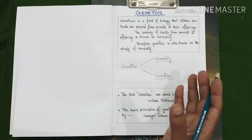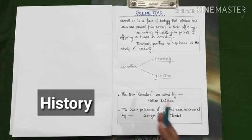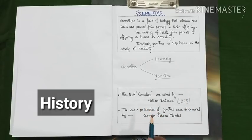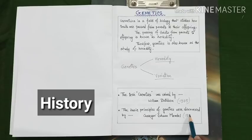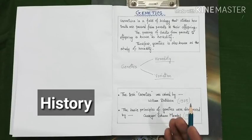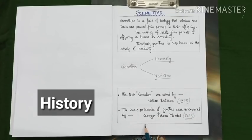Now, prior to moving to different terminology associated with genetics, we need to know about the history of genetics. Who coined the term genetics? The term genetics was coined by scientist William Bateson in the year 1905. And different basic principles of genetics were discovered by scientist Gregor Johann Mendel even long before 1905. He discovered different basic concepts and principles of genetics in the year 1866, but his work remained unnoticed till the year 1900. As he is crowned as the discoverer of basic principles of genetics, we refer to scientist Mendel as the father of genetics.